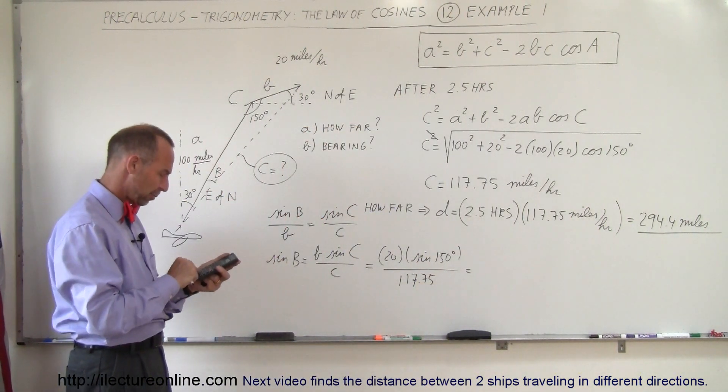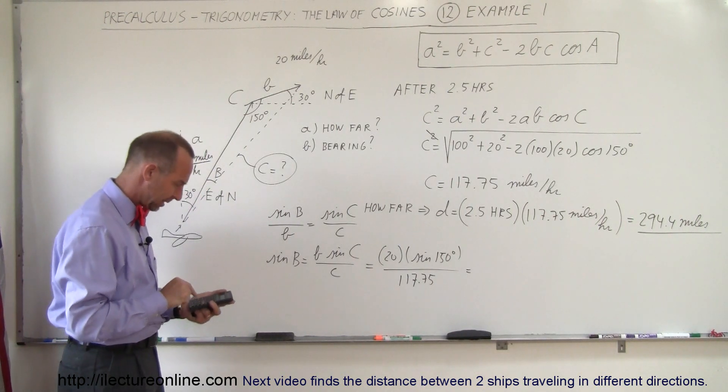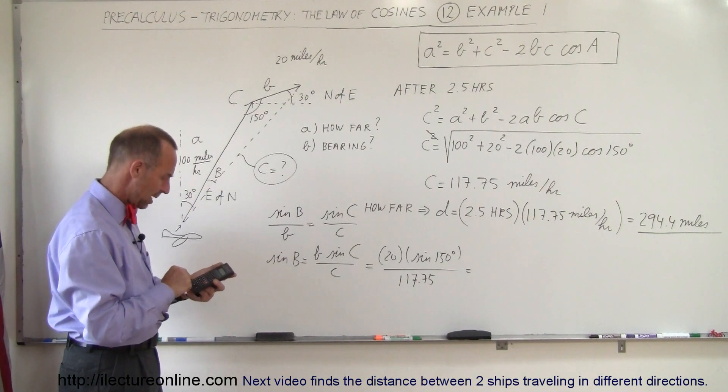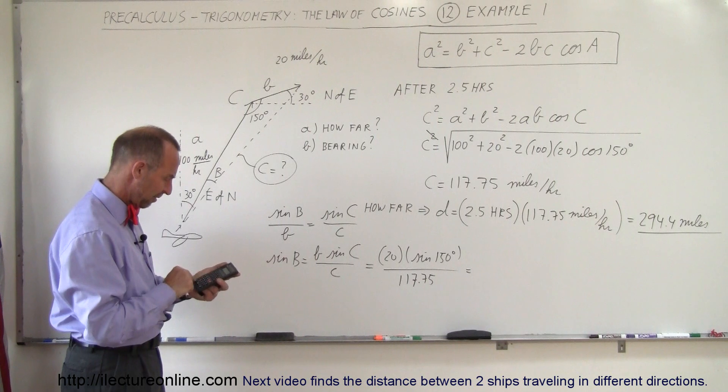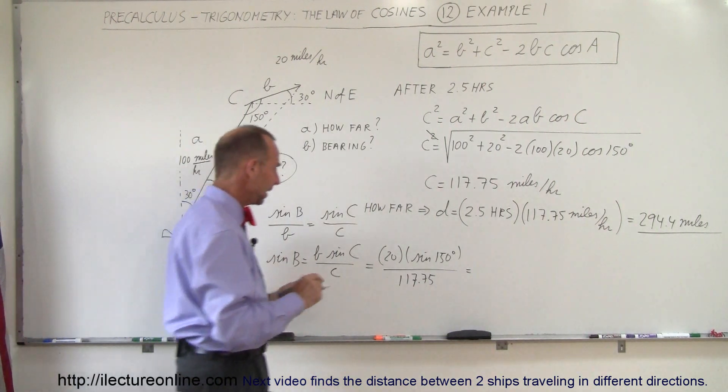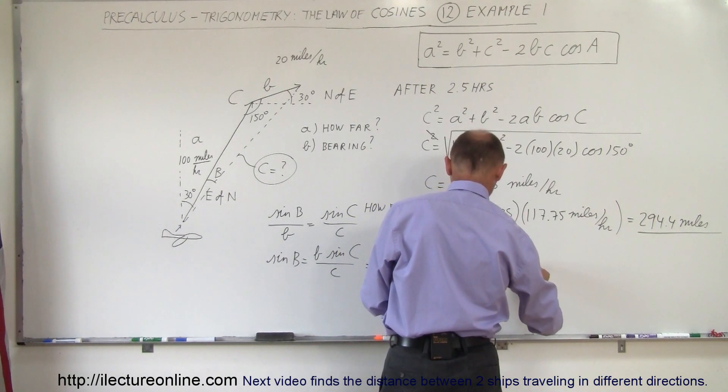So divide this by 2.5, that's in the denominator, so take the inverse of that, 1 over x. Okay, times 20, times 150, take the sine of that, equals, and we get 0.08493.